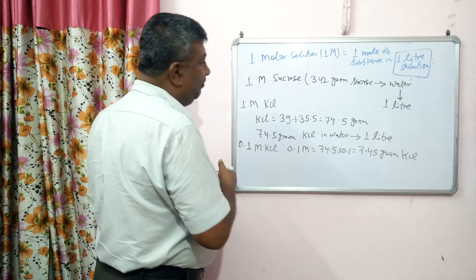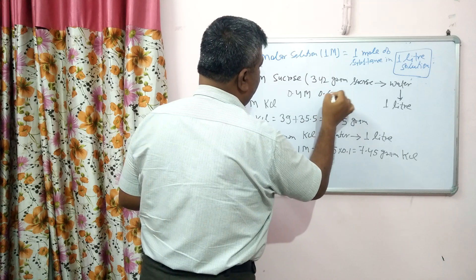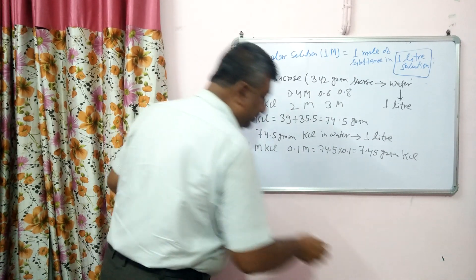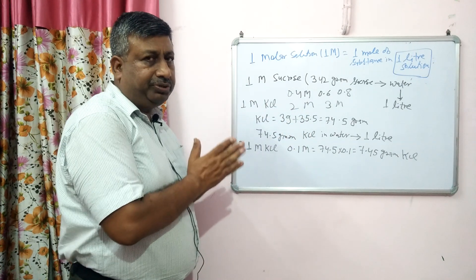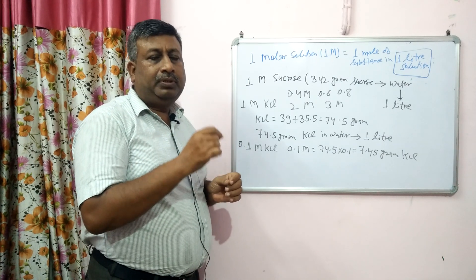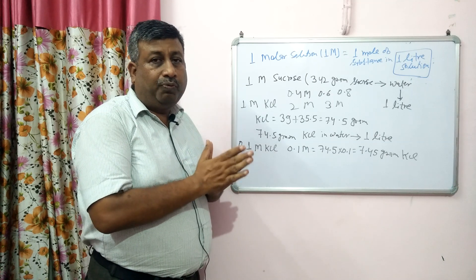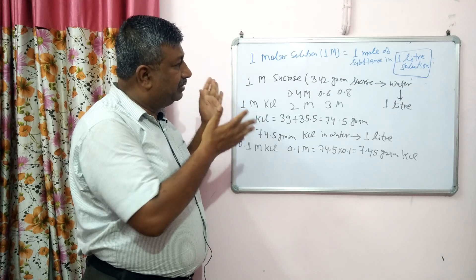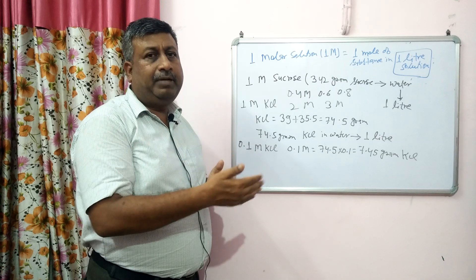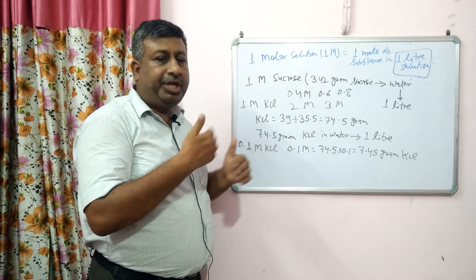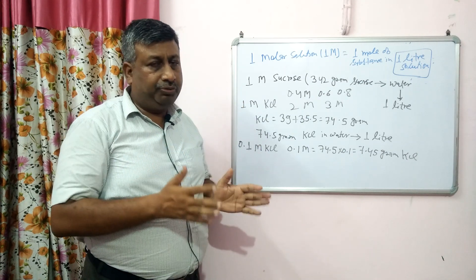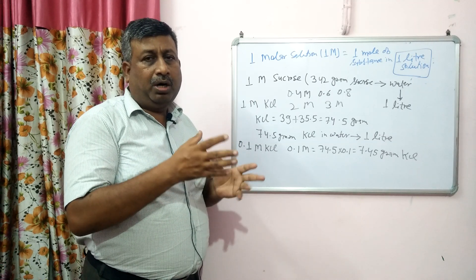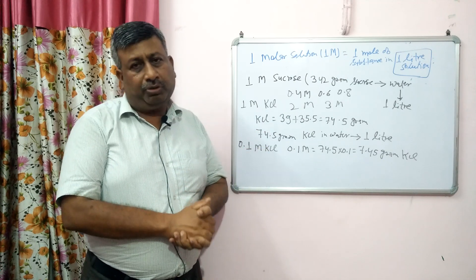Such type of solution is called a molar solution. If we know how to make a 1 molar solution, then we can make 0.4, 0.6, 0.8, 2 molar, or 3 molar solutions just by multiplying accordingly. One molar solution means 1 mole dissolved in solvent with the final solution made up to 1 liter — that is why these solutions are made in a 1 liter volumetric flask. The 1 mole is calculated by summing up the atomic masses of the substance. Thank you very much.